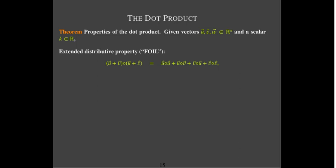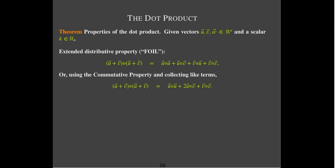If we put some of those properties together and use the distributive property twice, we get this extended distributive property. So if I take the dot product of a pair of vectors with itself and use the idea of FOIL, I take the dot product of the first vectors, add that to the dot product of the outside vectors, add that to the dot product of the inside vectors, and then add that to the dot product of the last — so you'll get four terms. Now, two of these terms are the same because of the commutative property: u dotted with v is the same as v dotted with u. So those are like terms and we can collect them.